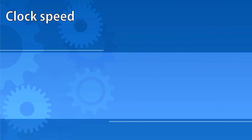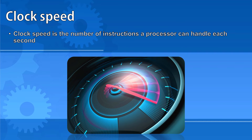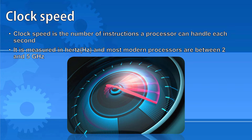Clock speed is the number of instructions a processor can handle each second. It's measured in hertz, and most modern processors are between 2 and 5 gigahertz. This means they can perform between 2 and 5 billion instructions per second. A higher clock speed means a faster running processor.